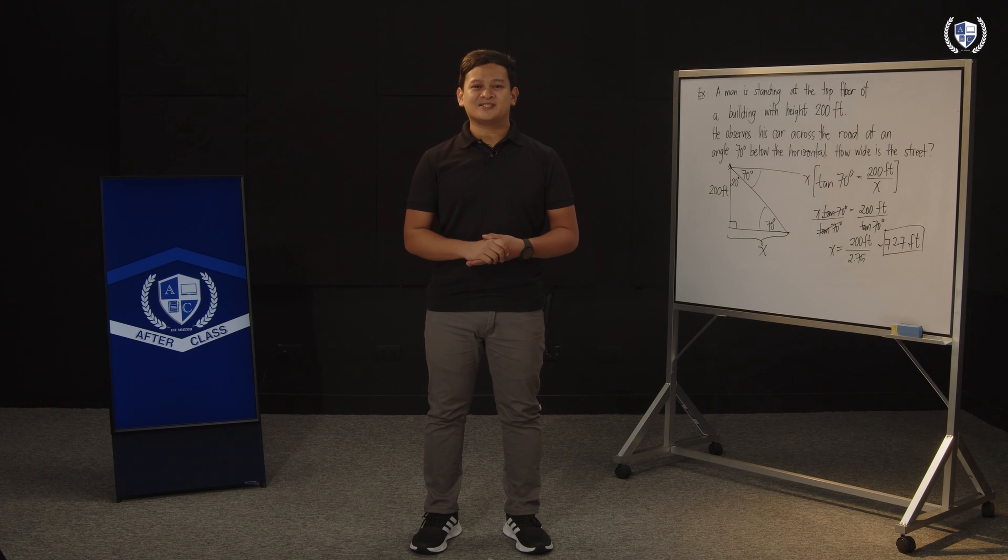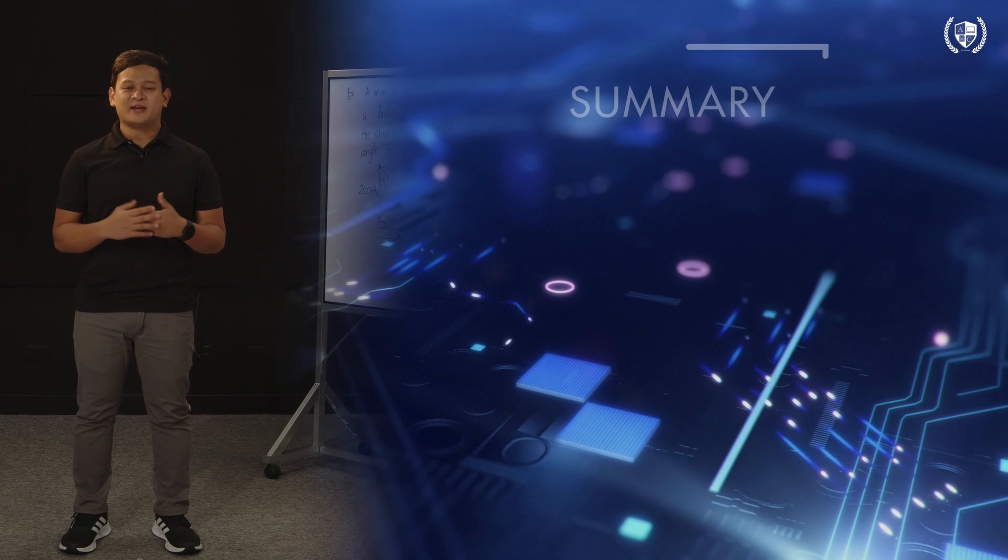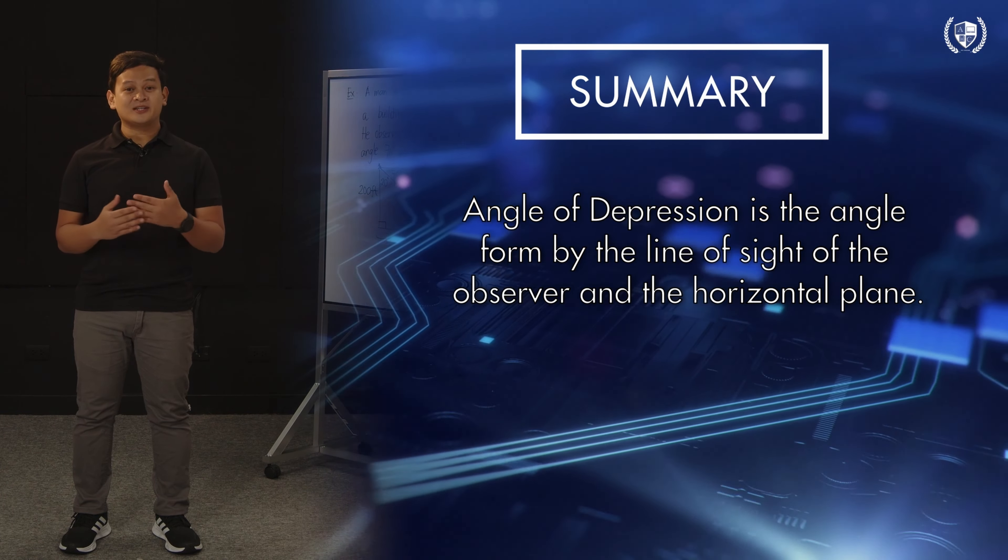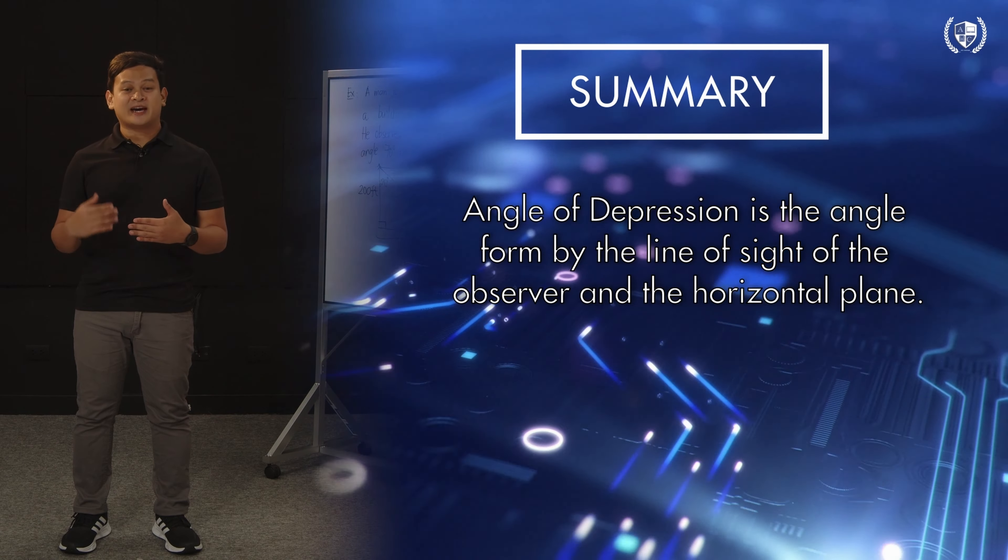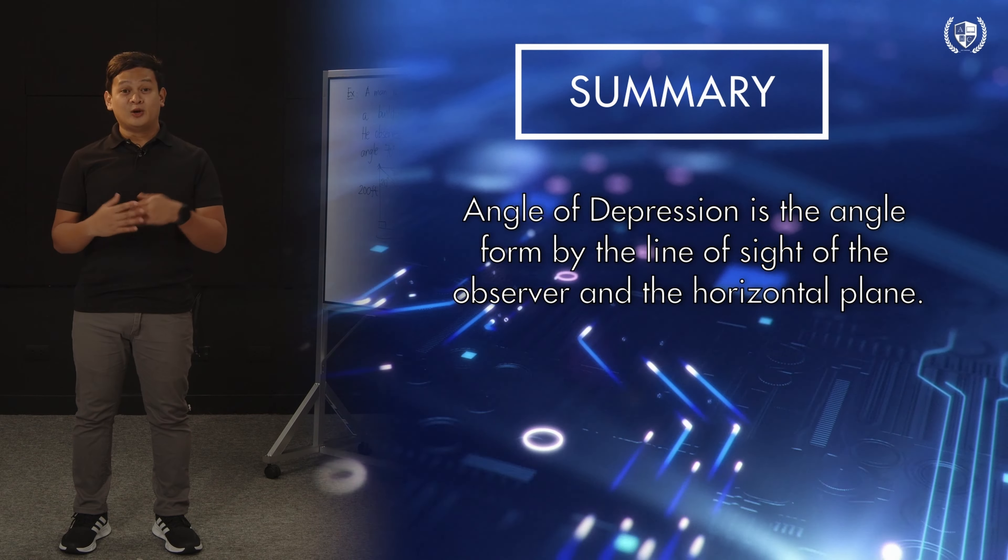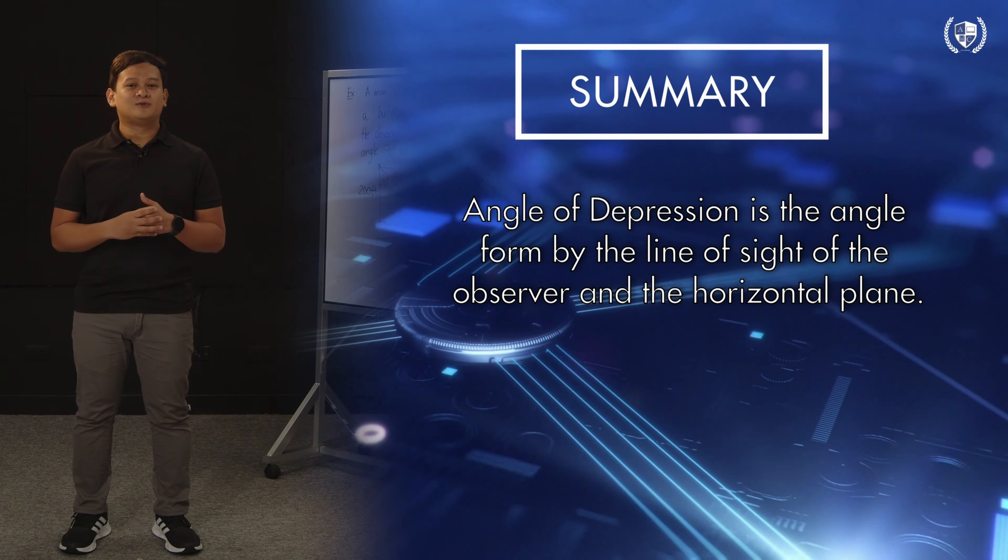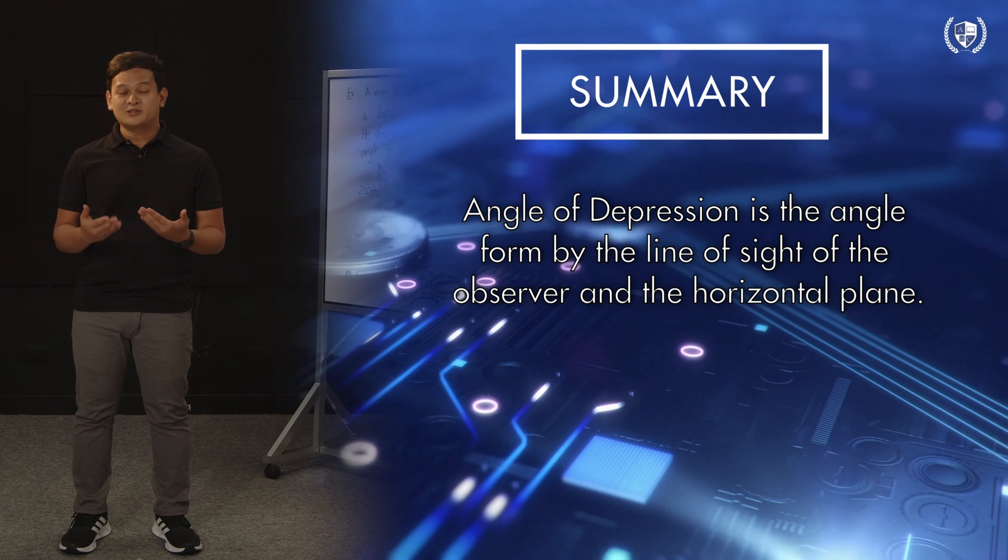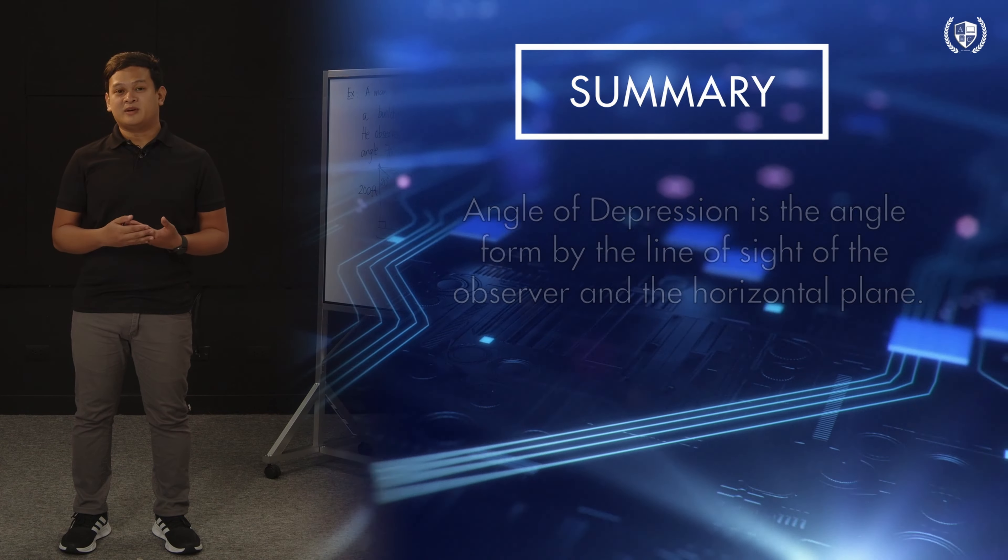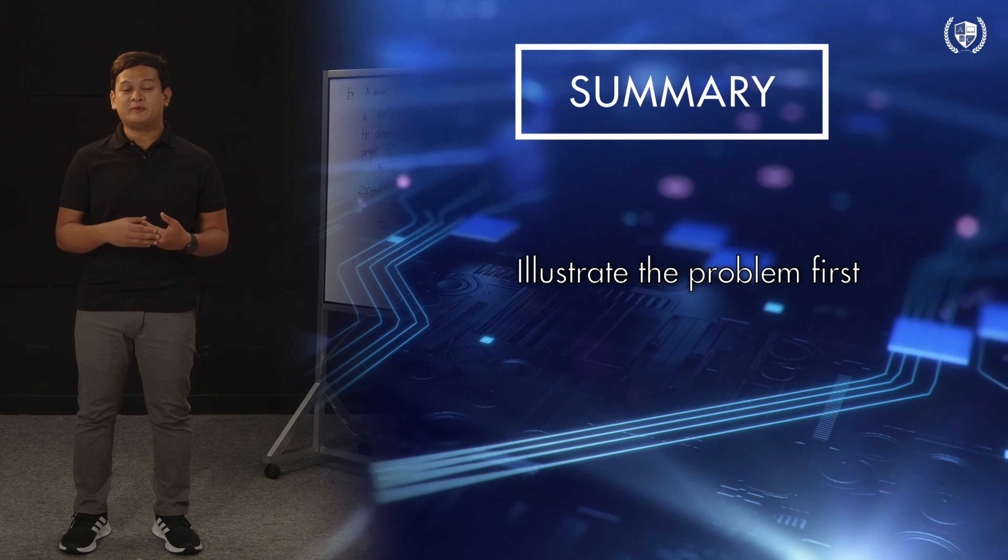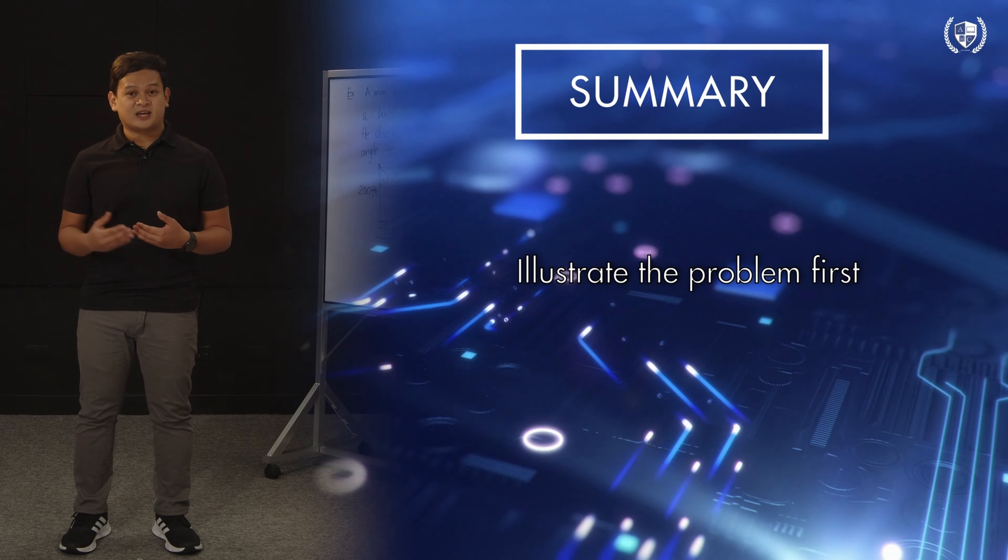To summarize what we've discussed, let's redefine the angle of depression. The angle of depression is the angle formed by the horizontal and the line of sight, wherein your object being observed is below the line of sight or below the observer. And to solve those problems, what do we need to do? Obviously, we need to illustrate them. If the illustration is not given first, it's better to draw the problem before proceeding to the next steps.